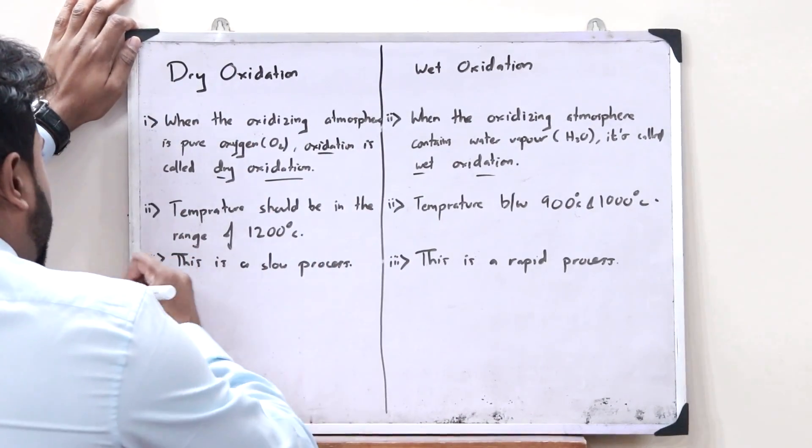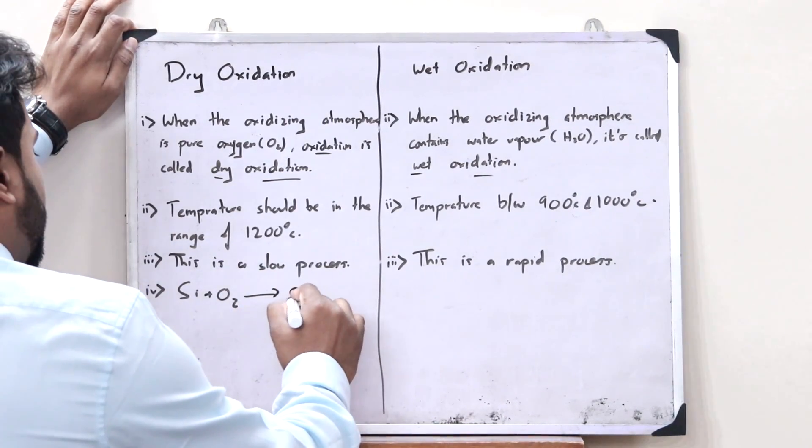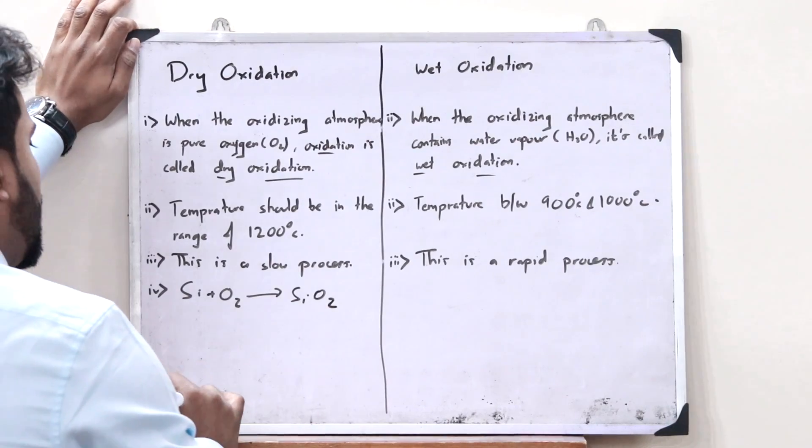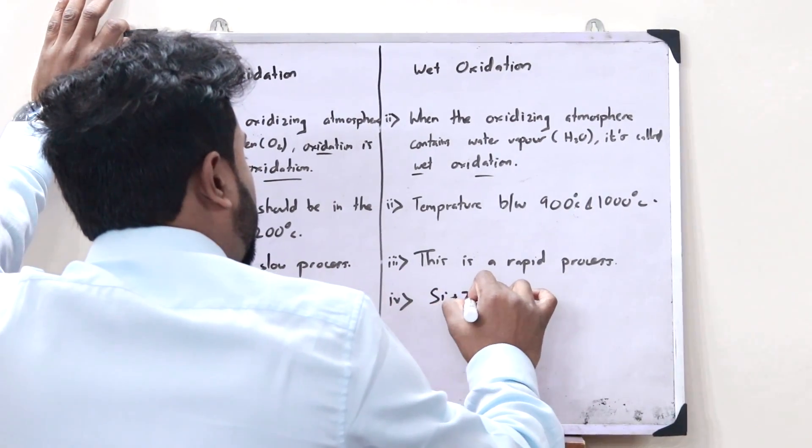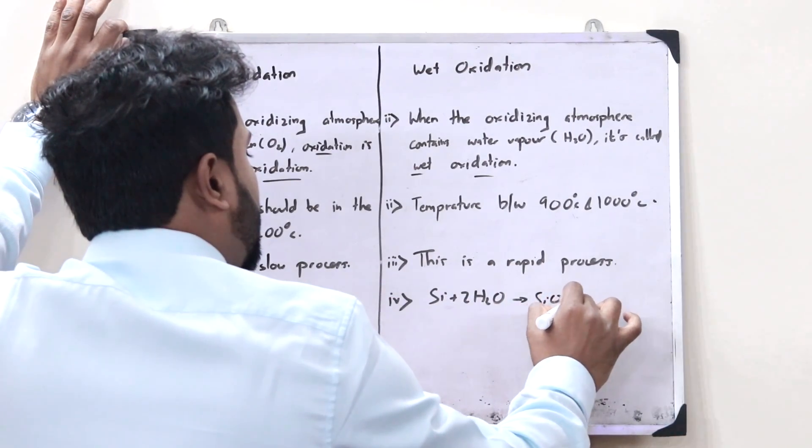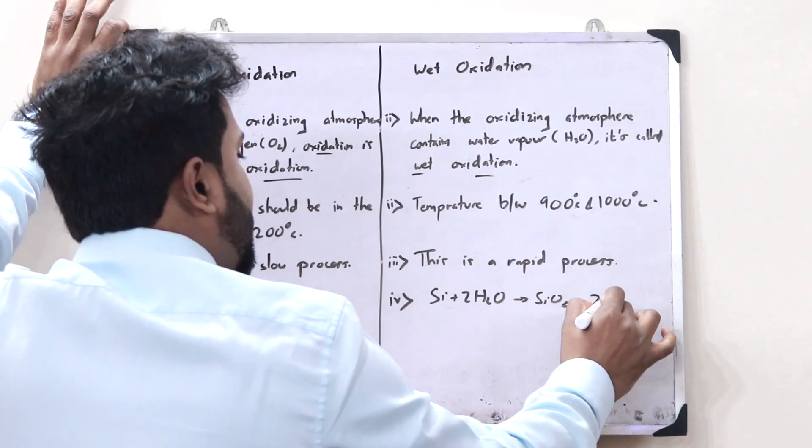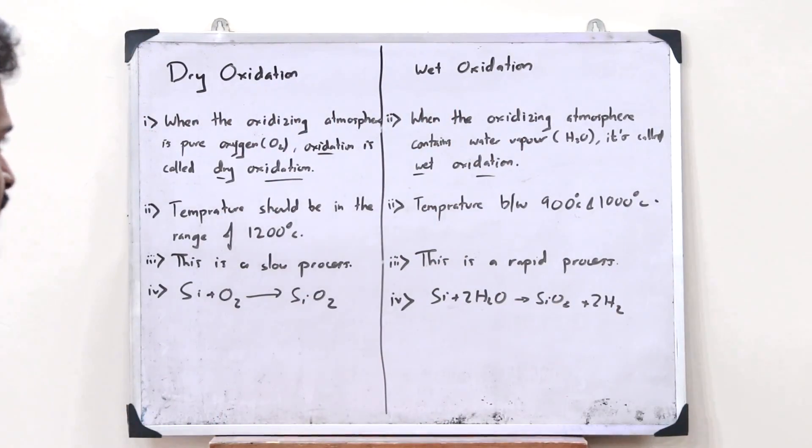The equation for dry oxidation is Si plus O2 giving SiO2. And the equation for wet oxidation is Si plus 2H2O giving SiO2 plus 2H2. These are the equations in the case of dry oxidation and wet oxidation.